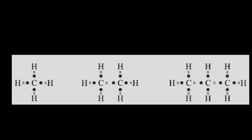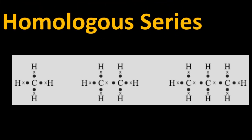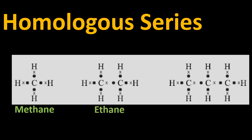Alkanes show a homologous series. With one carbon atom, two carbon atoms, and three carbon atoms, the whole chain differs by a CH2 group. The first member of the series is methane, having one carbon atom. For one carbon, we use the prefix 'meth,' and the suffix '-ane' represents that it is an alkane with a single bond. For two carbon atoms, we use 'eth,' giving us ethane. For three carbon atoms, we use 'prop,' giving us propane.